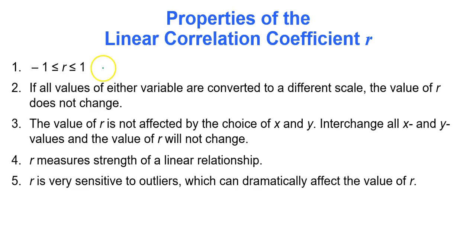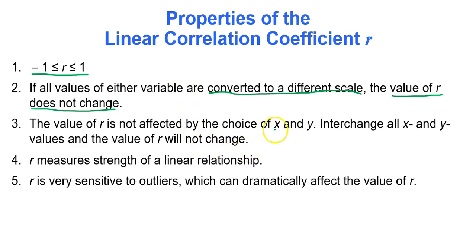Some important properties of the linear correlation coefficient r: r is always between negative 1 and 1. If all values of either variable are converted to a different scale, the value of r will not change — for example, expressing population in thousands versus millions doesn't affect r. The value of r is also not affected by the choice of which variable is x and which is y. R measures the strength of a linear relationship and is sensitive to outliers, but technology will handle all of that for us.